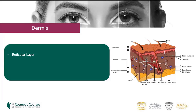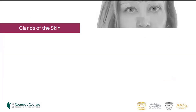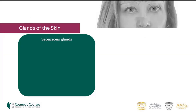The reticular layer is slightly deeper and its role is to strengthen the skin and give it its elastic quality. This layer also contains hair follicles, mast cells, nerve endings, lymphatics and fibroblasts, as well as sweat glands and sebaceous glands.